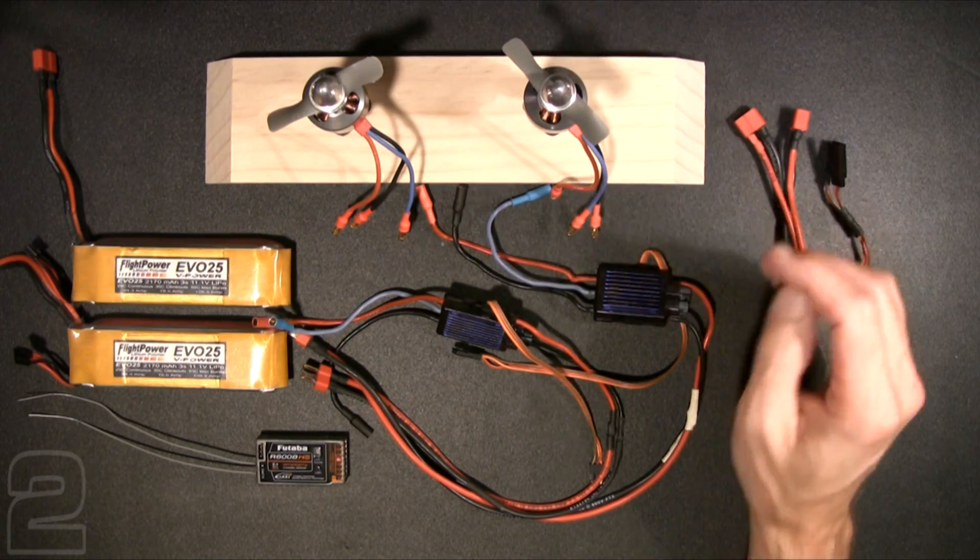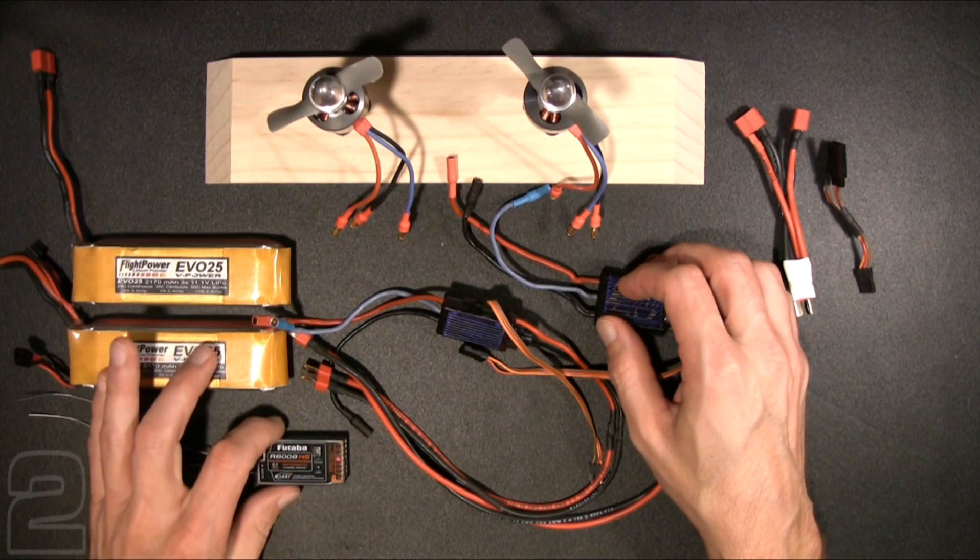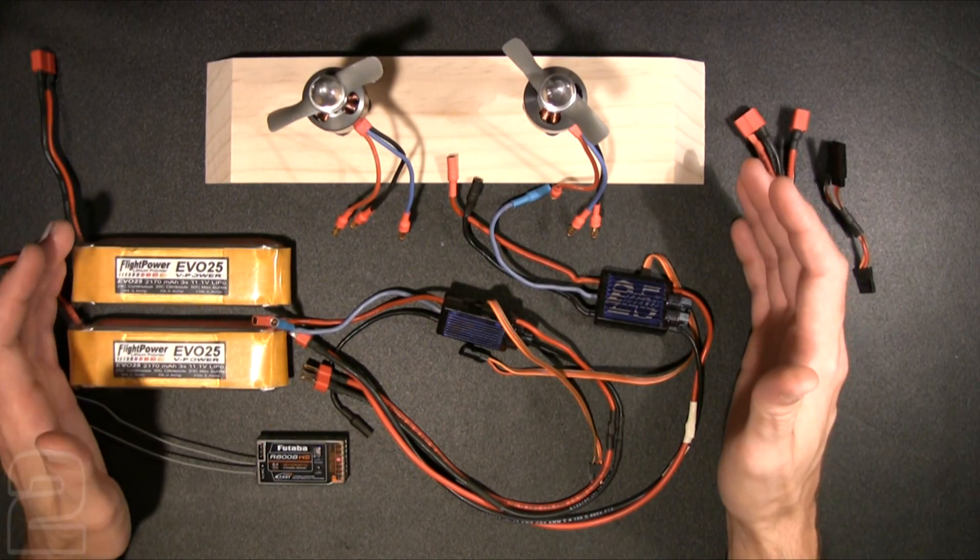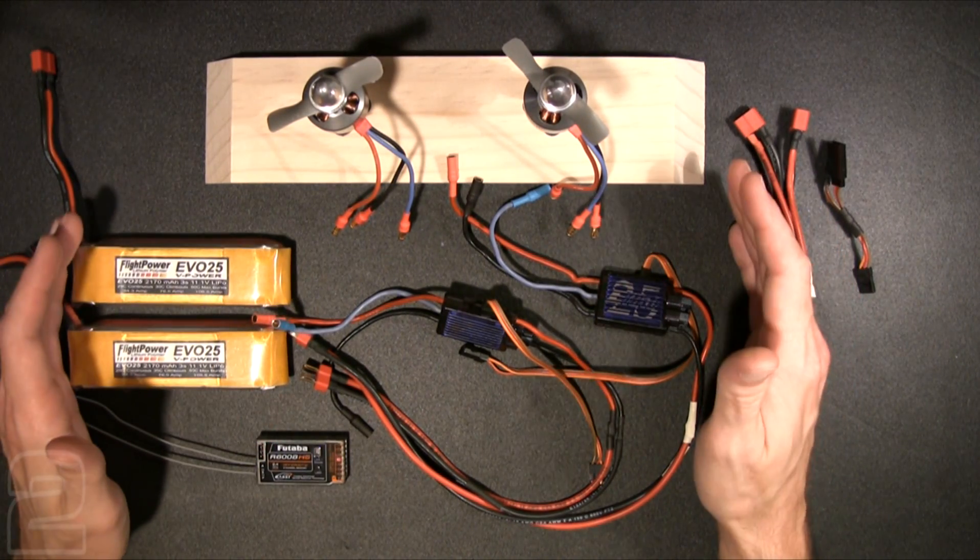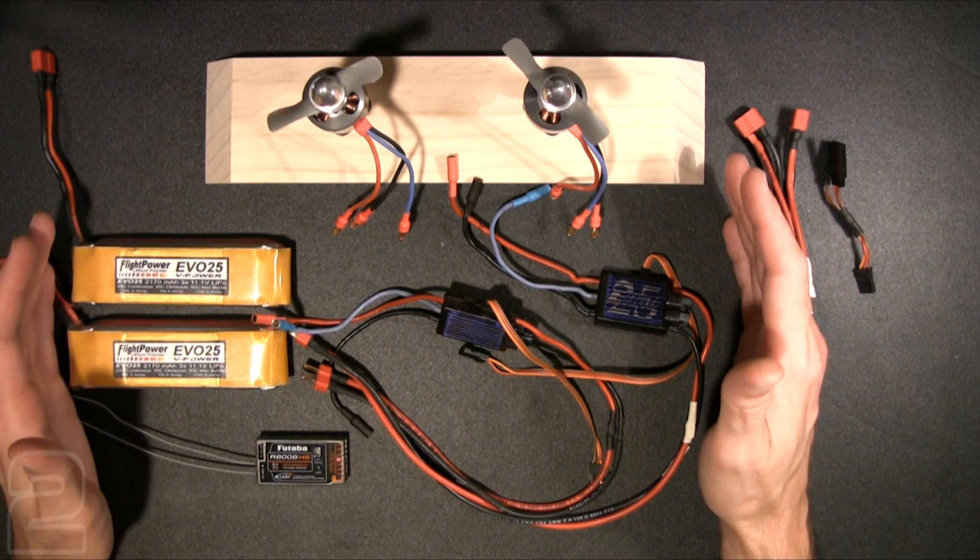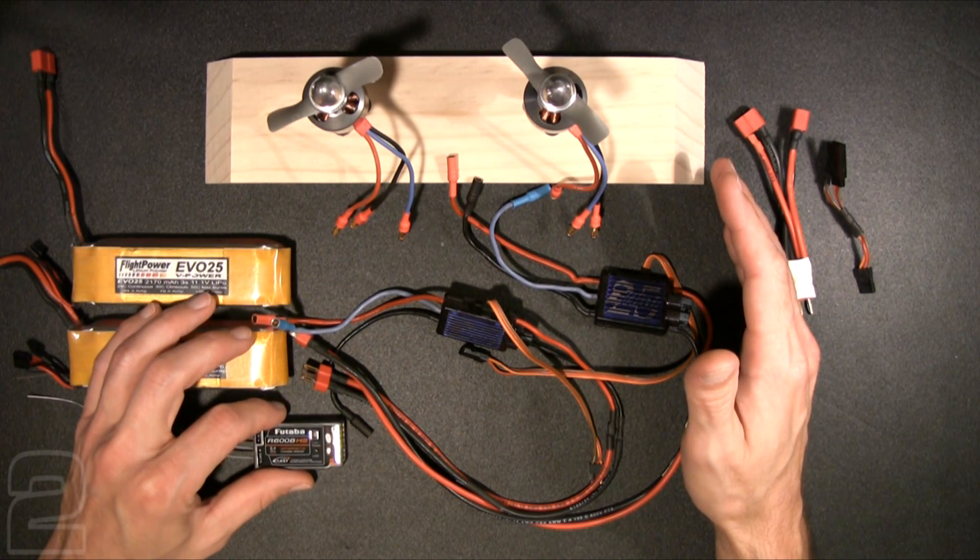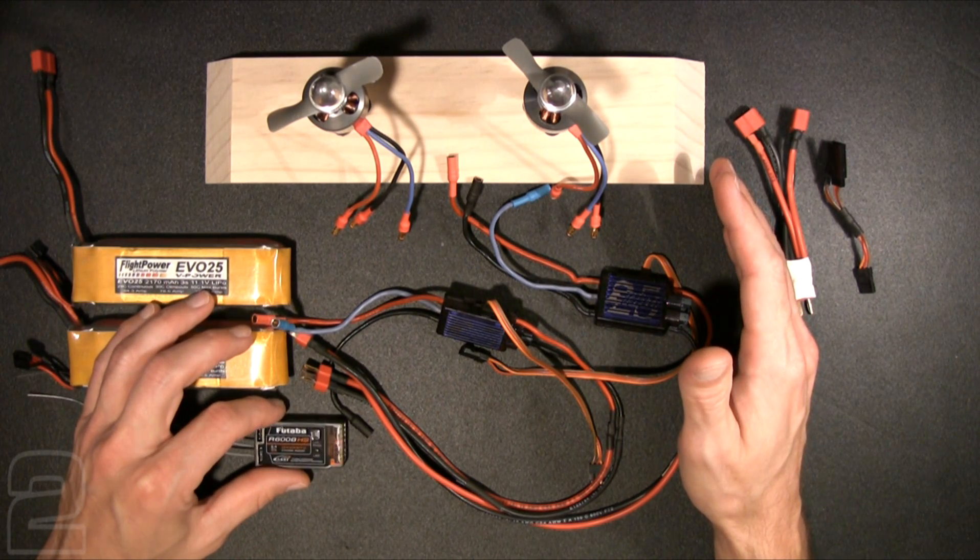We have two brushless motors, two electronic speed controls, two flight packs, and a single receiver. This completes an entire power plant. Much like our basic power plant wiring video, this is everything you need to get up and off the ground. The only thing missing would be the servos that would actuate the control surfaces to complete your radio system.